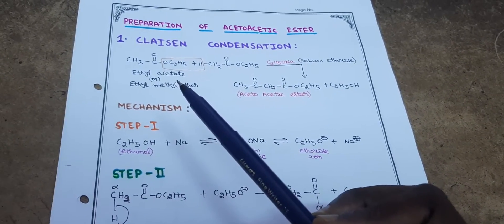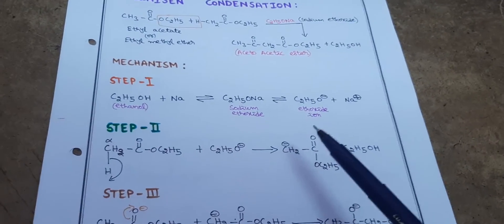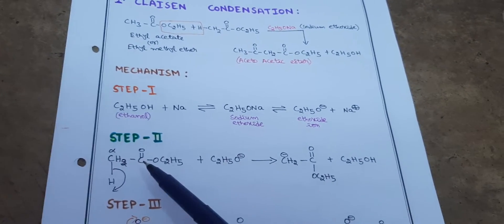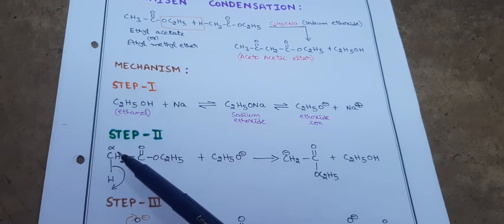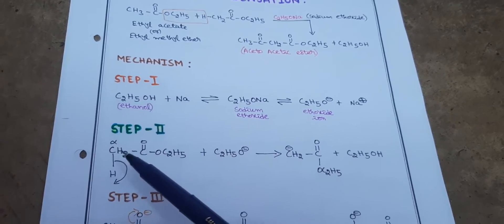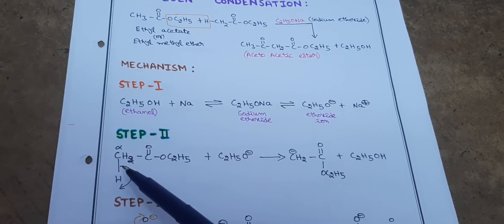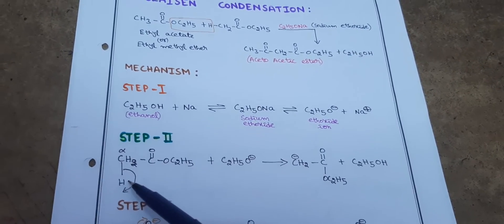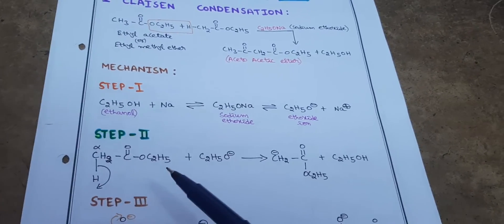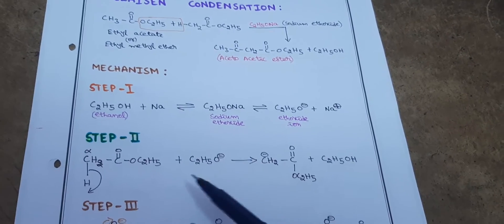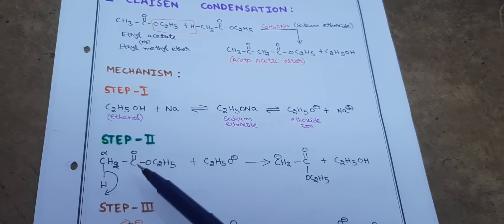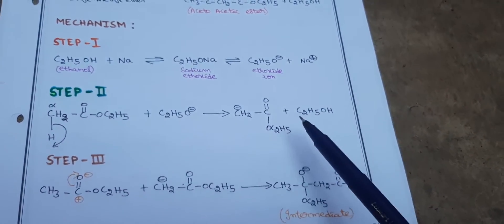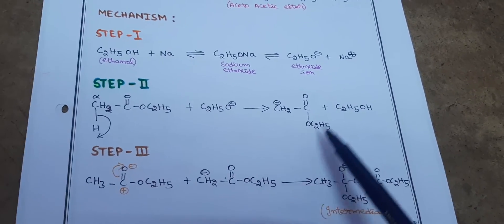Step 2: A single mole of ethyl acetate is taken and reacted with the ethoxide ion formed in Step 1. The alpha carbon is the carbon adjacent to any functional group, and it is more reactive. A hydrogen is removed from the CH3 (methyl group), producing a CH2- negative charge. The H+ released reacts with C2H5O- to form a single mole of ethyl alcohol.